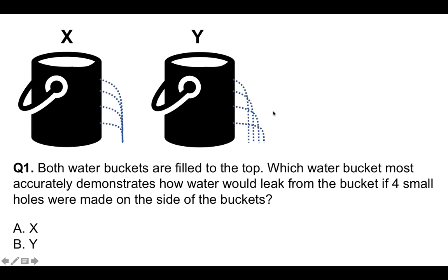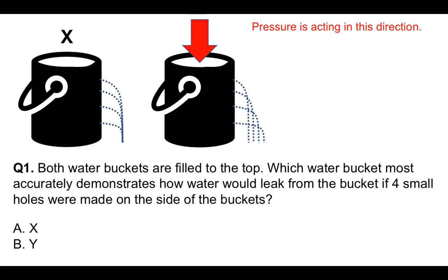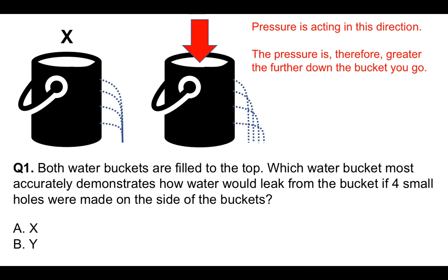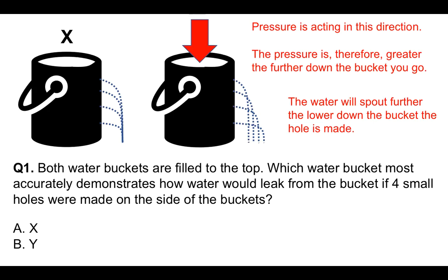This is how to answer this question. Pressure is acting downward on both of the buckets. Therefore, the pressure is greater the further down the bucket you go, which means the water will spout further the lower down the bucket the hole is made. Therefore, the correct answer is Y, because the pressure is acting down — there's more pressure acting lower, which means the water will spout further out from the lower holes.